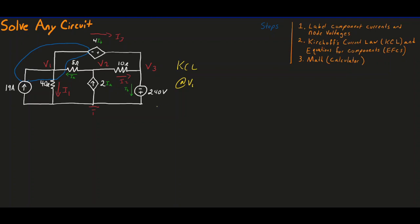If we look at that, we have 19 amps pointing towards it. So we're going to say 19. We have IA over here pointing towards it. So we'll say 19 plus IA is equal to the currents that are pointing away from it. So it's going to be I1 and I3. So it's going to be equal to I1 plus I3. And now we're done with KCL V1.